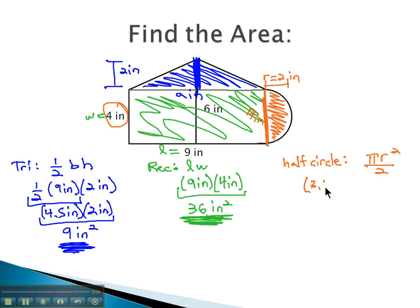Plugging this in, pi is 3.14, the radius is 2 inches over 2. Square the 2 inches. Order of operations says to do the exponent first, 2 squared is 4 square inches over 2. We'll do 3.14 times 4. We get 12.56 square inches over 2. We divide by 2 to get the half circle at 6.28 square inches.